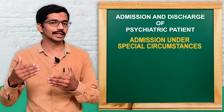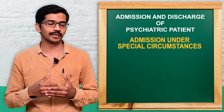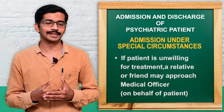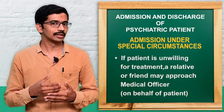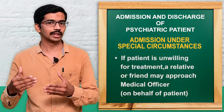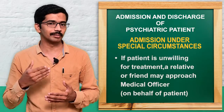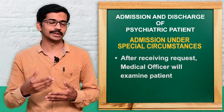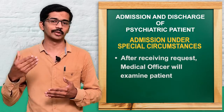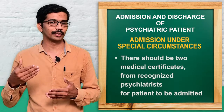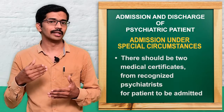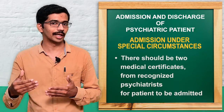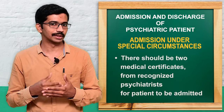In admission under special circumstances, if the person is not ready or not willing to go for treatment, the relatives or friends can approach the medical officer on behalf of the patient and request protection for the patient. After receiving the request, the medical officer will examine the patient, and there should be support of two medical certificates from recognized psychiatrists before admitting the patient into the psychiatric hospital.